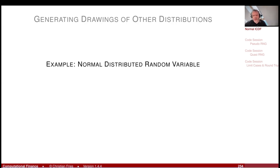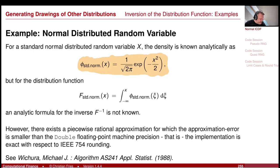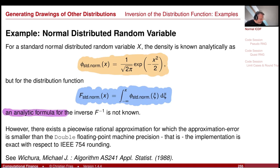This is really maybe one of the most important applications. The first remark is that we do not have an inverse of the distribution function analytically. We do not even have an analytic formula for the distribution function for the normal distribution. For the normal distribution, the density is 1 divided by square root of 2π times exponential minus x squared over 2. The distribution function is the integral of the density, but an analytic formula for F inverse is not known.